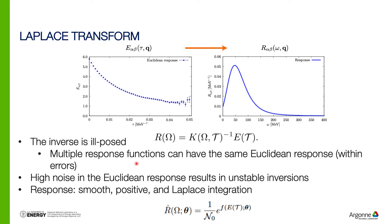This is not a forward problem in the typical deep learning sense — rather, we observe something and want to recover the input that produced it. The problem is further exacerbated by high noise in the Euclidean response, which results in unstable inversions. Moreover, there are domain-specific constraints such as smoothness, positivity — the response must be guaranteed positive — and the response function must satisfy the Laplace integration. Performing this inversion in a simulation setting is very expensive, which is why scientists are interested in developing a surrogate model for this inversion problem.